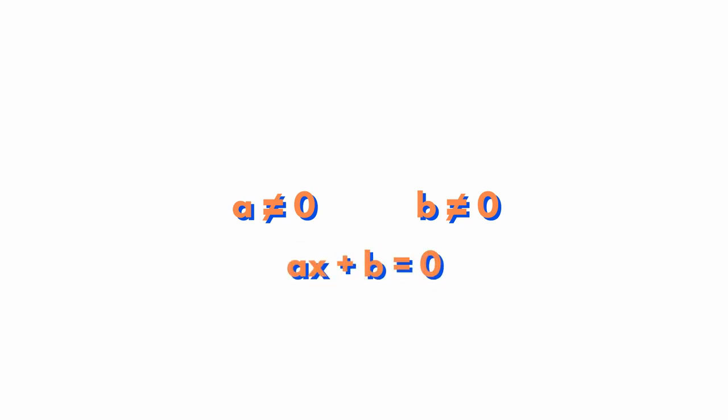When a equals 0 and b equals 0, we have 0x + b = 0, which becomes 0 + b = 0, so b = 0. This is true for every real number we give to x, and it is not always that obvious. Let's try to solve this equation.